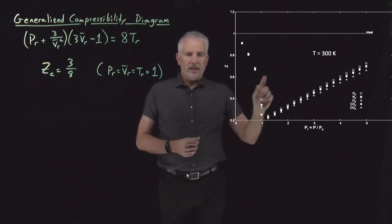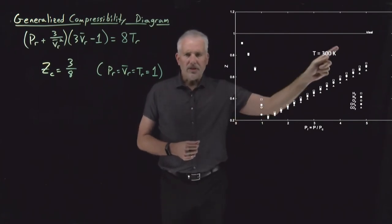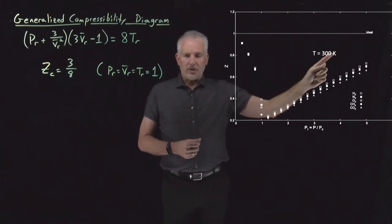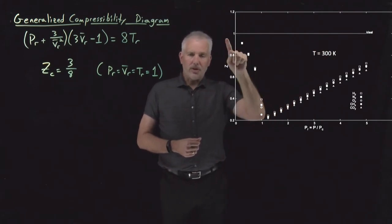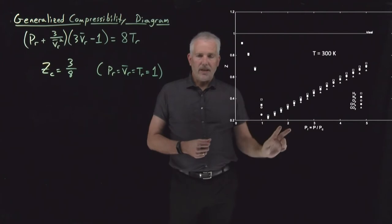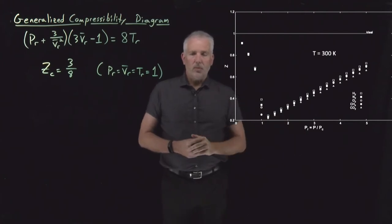They all go through the same sort of drop, go through a minimum very close to the critical pressure and begin increasing after that and will eventually cross above Z equals one. So this is again, actually this is a typo that shouldn't say 300 Kelvin, that one should say critical temperature. When we're at the critical temperature, all these gases behave the same when plotted as a function of their reduced pressure.